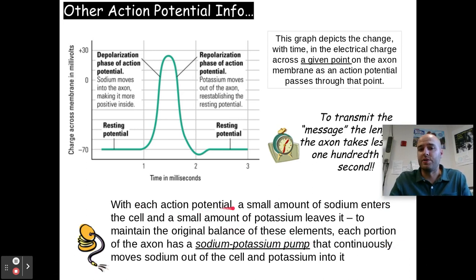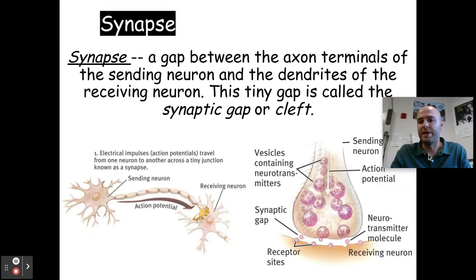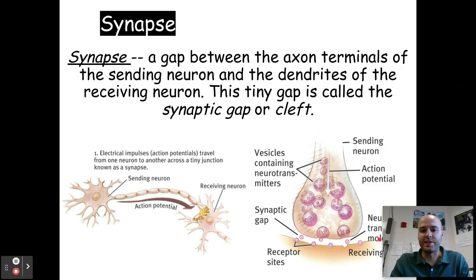With each action potential, a small amount of sodium enters the cell and a small amount of potassium leaves it. To maintain the original balance of these elements, each portion of the axon has a sodium-potassium pump that continuously moves sodium out of the cell and potassium into it, always trying to reach back to resting potential to be ready to fire again. When the action potential reaches the axon terminals, that's where it will send the message to another neuron so it can continue the message.